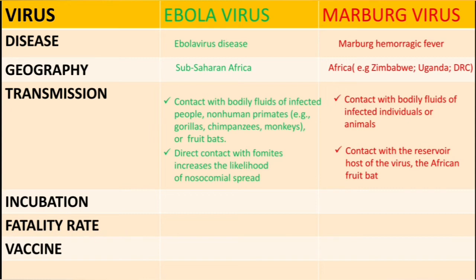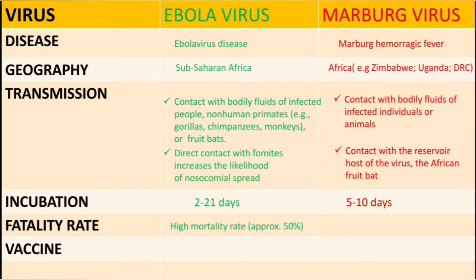The Marburg virus may also be transmitted through contact with its reservoir host, the African fruit bat. In terms of incubation, the incubation period of the Ebola virus is usually 2 to 21 days, while for the Marburg virus it is 5 to 10 days. The fatality rate for Ebola virus is very high at approximately 50%, and for Marburg virus it is 25 to 90%.